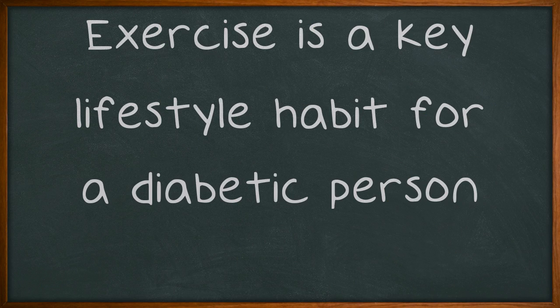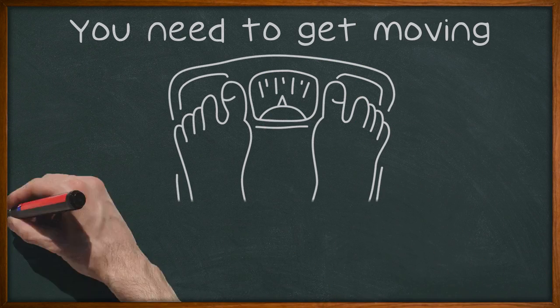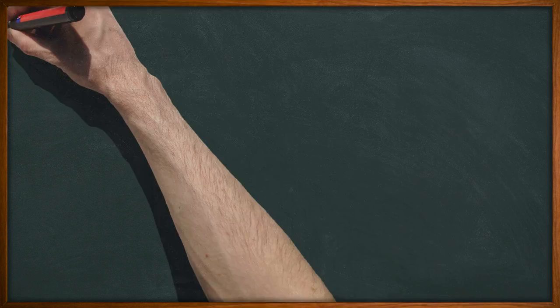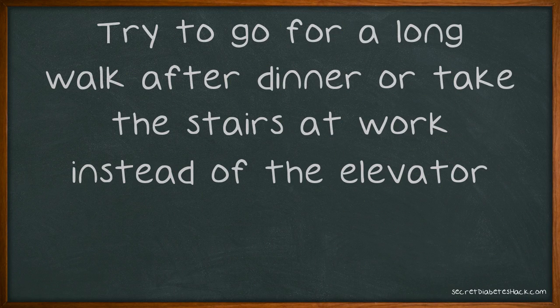Exercise is a key lifestyle habit for a diabetic person. You need to get moving as much as possible to help keep your weight at a reasonable level and your organs in tip-top shape. Try to go for a long walk after dinner or take the stairs at work instead of the elevator.